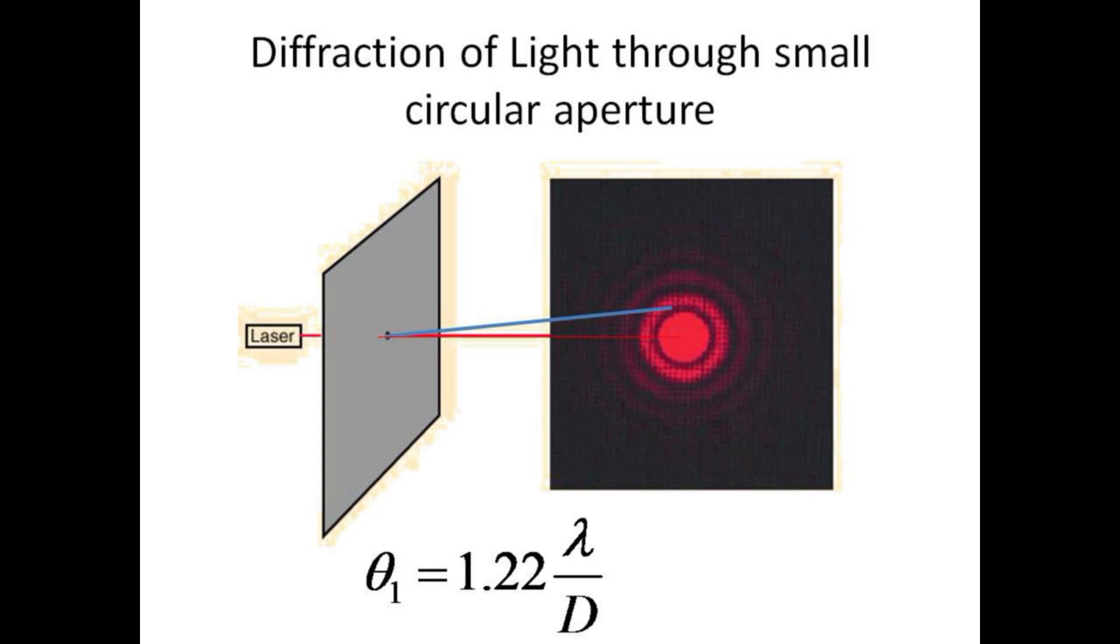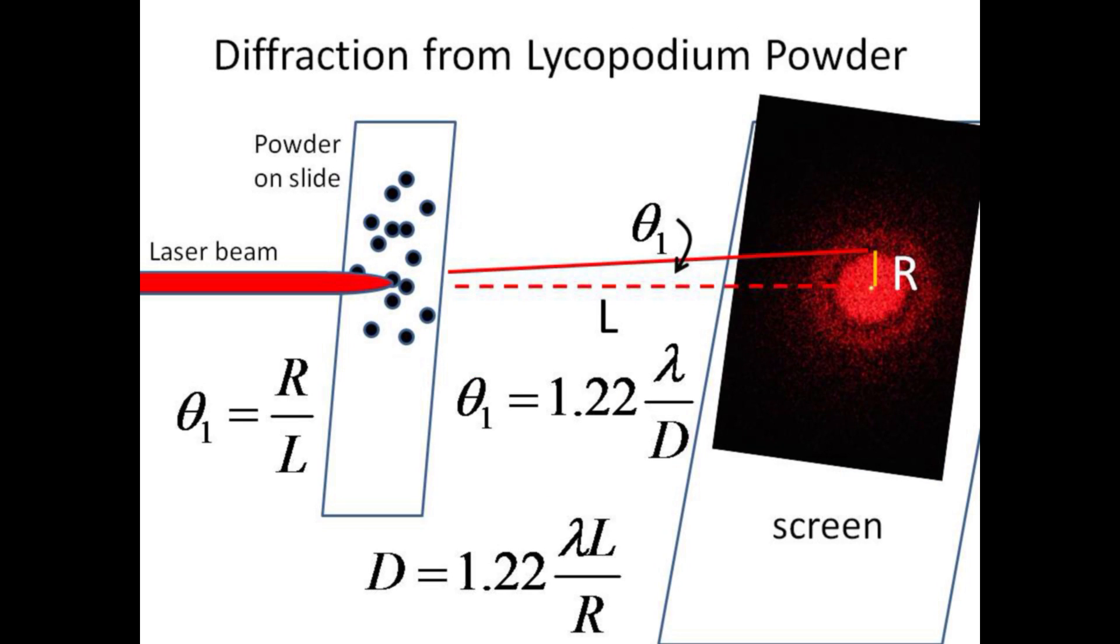When light shines through a circular aperture, a circular diffraction pattern of concentric rings is formed. The angle in radians of the center bright circle is given by 1.22 times the wavelength divided by the diameter of the aperture. A similar diffraction pattern emerges when light strikes a collection of randomly placed circular obstacles.